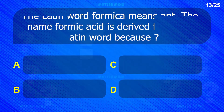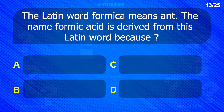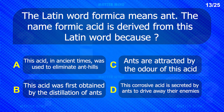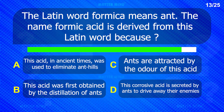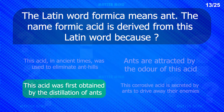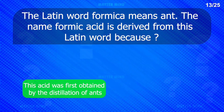The name formic acid is derived from the Latin word for ants, because this acid was first obtained by the distillation of ants.